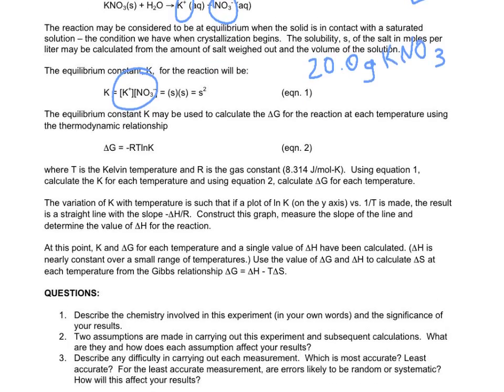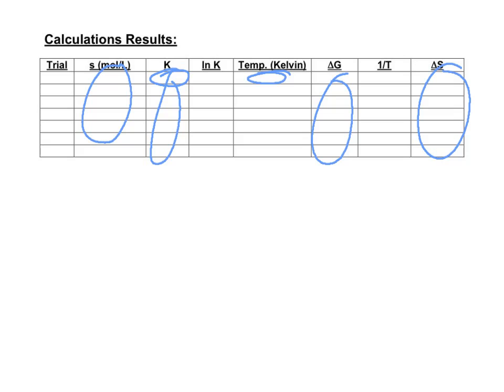You can use that equilibrium constant to calculate the delta G. We know K at each temperature, so you can calculate delta G at each temperature using the equation delta G = -RT ln(K), where R is the gas constant 8.314. Record that in your table as well. After you've figured out the Ks, you can figure out the delta Gs.